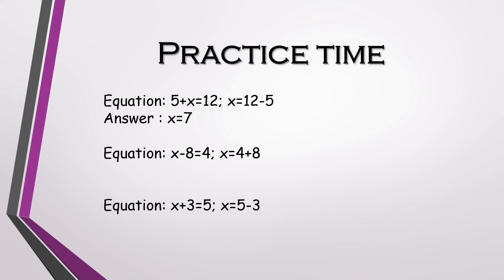Now let's go to the second equation: x minus 8 equals to 4. Here, we are going to add 8 on both the sides. So x plus 8 and minus 8 cancel each other, and 4 plus 8 equals to 12. This gives us the answer x equals to 12.